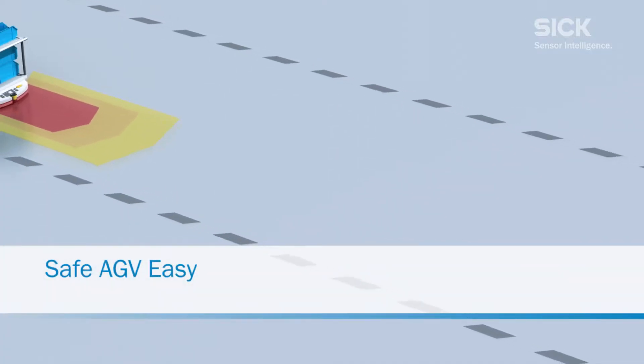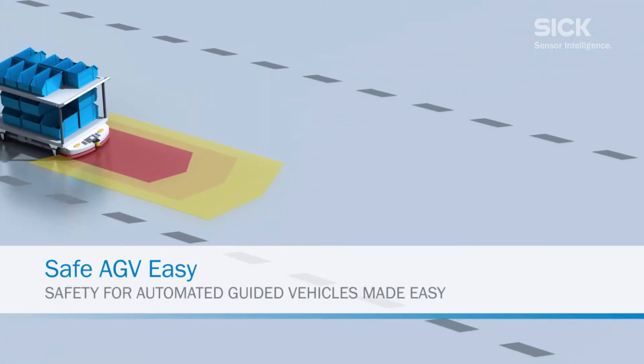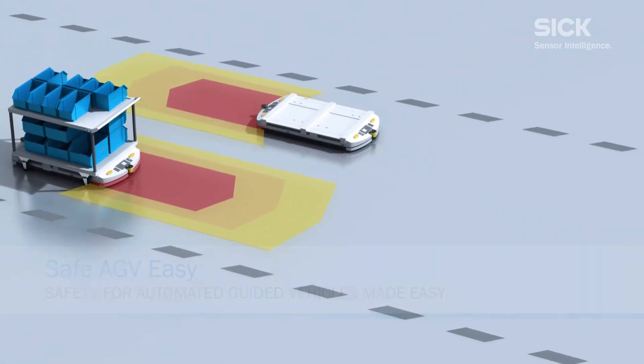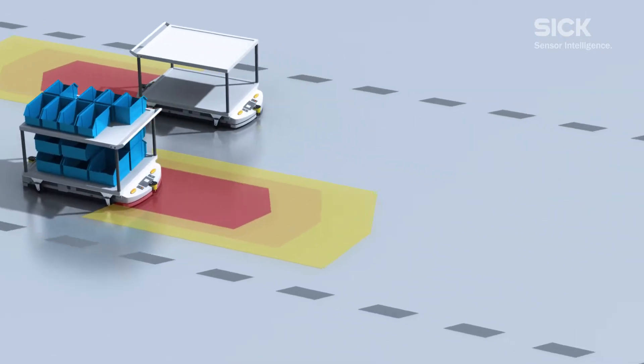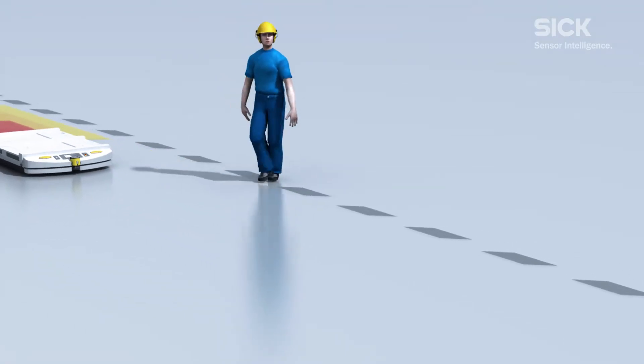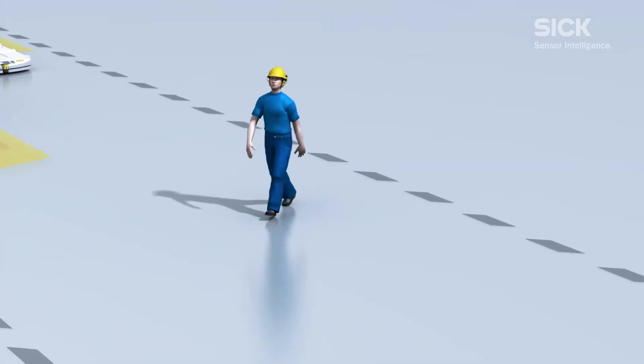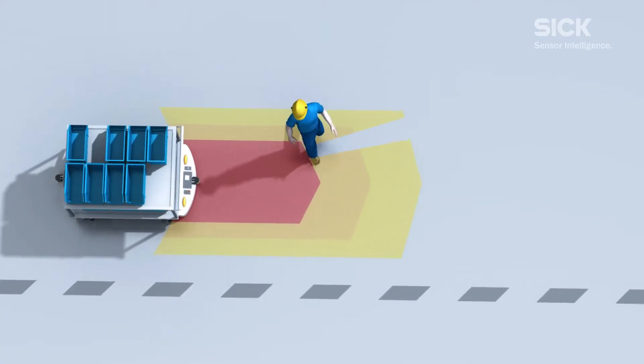During operation, it is not uncommon for small industrial trucks known as automated guided carts to cross paths with workers traveling on foot. In order to avoid accidents, a suitable form of protection for all directions of travel is required.